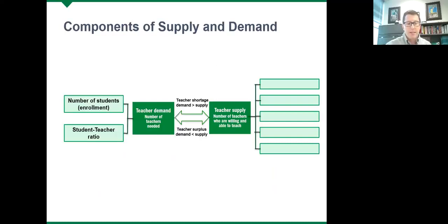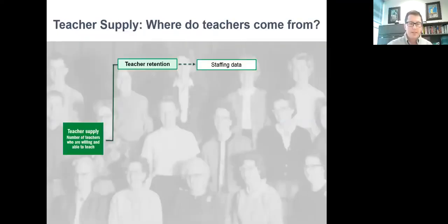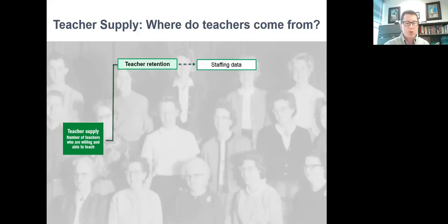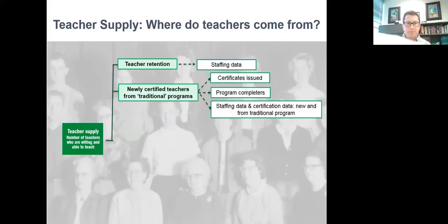To determine teacher supply, you calculate all of the teachers coming from all of the various sources. Most supply sources can come from data that states already collect. The major source of teachers in a given year are those who continue teaching from the year before — the percent of teachers who continue teaching from year to year is the retention rate. To assess this, we look at staffing data for a number of years and record the numbers of teachers who appear for the same schools in consecutive years. Looking at educator mobility involves a similar approach — you look at whether educators who appear in the staffing data for consecutive years remain at the same school each year.